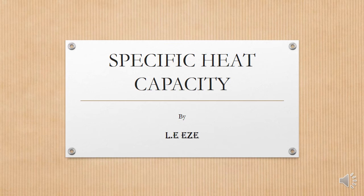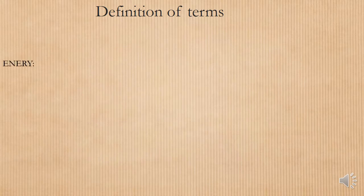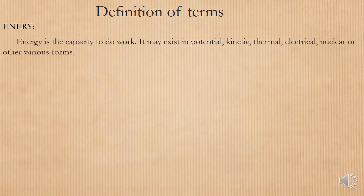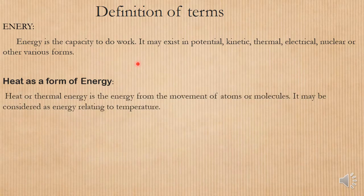Welcome to today's class. We'll be handling specific heat capacity. Energy is the capacity to do work. It may exist in various forms — potential, kinetic, thermal, electrical, nuclear, or other forms of energy. Heat is a form of energy, so we shall concentrate on heat as a form of energy.